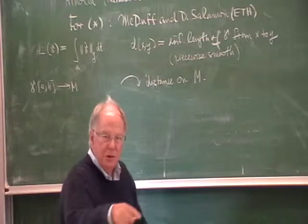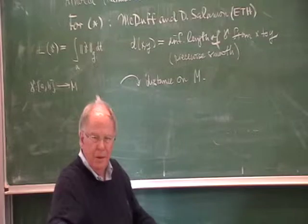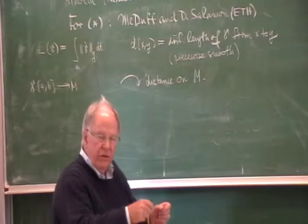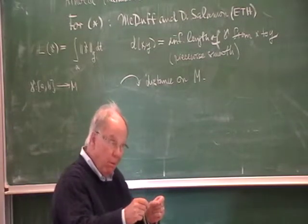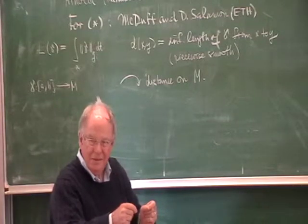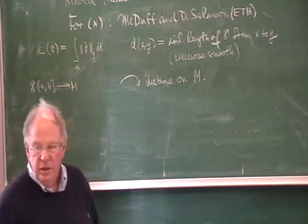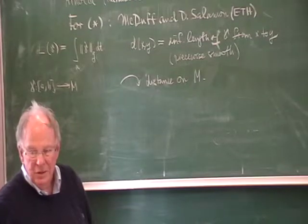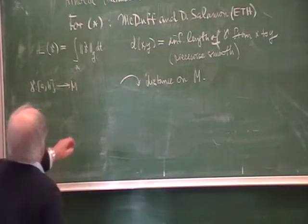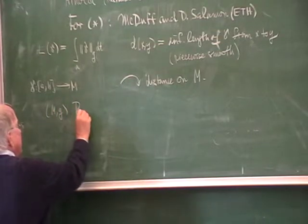The distance from x to y equals the distance from y to x, and the triangle inequality holds. What you need to check is that if the distance is zero, then x and y are not equal — there's no hope in the pseudo-Riemannian case. The pseudo-Riemannian case becomes very delicate. Everything I'm saying now is in the Riemannian case.